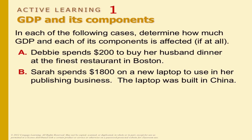Sarah spent $1,800 on a new laptop to use in her publishing business. The laptop was built in China. What component? Investment goes up, net exports goes down. So what happened to GDP? GDP stays the same — investment up by $1,800, net exports down by $1,800.